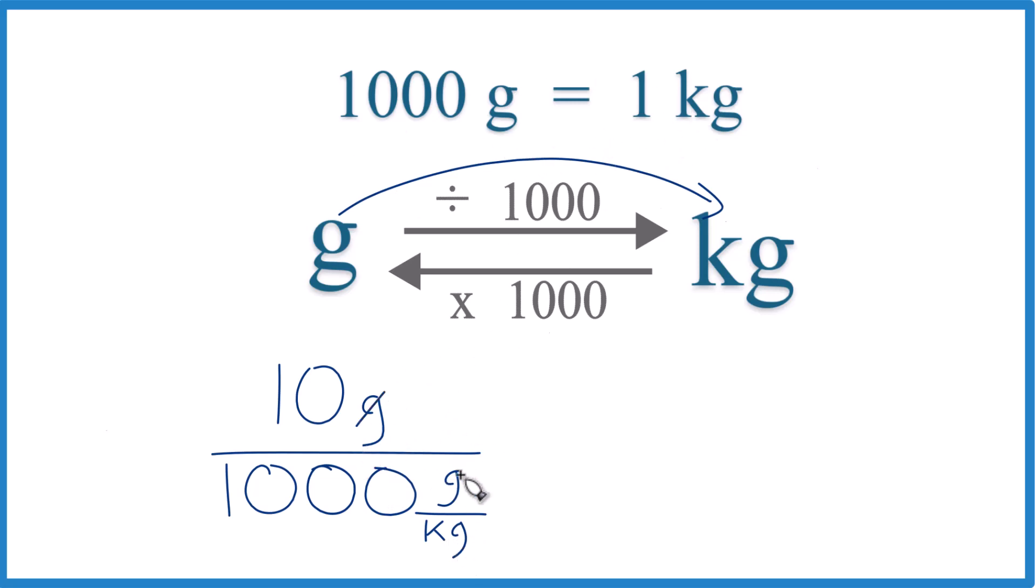So we have grams on the top and the bottom. They cancel out. What we can do is we can move the decimal place 1, 2, 3. Put a 0 in as our placeholder there. And our 10 grams equals 0.01 kilograms.